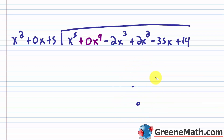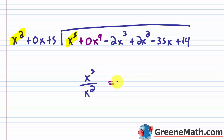So the first step is division — with polynomial division it's leading term into leading term. So what is x to the fifth power divided by x squared? Using rules of exponents: x stays, 5 minus 2 is 3, so this is x cubed. I'll write x cubed above the x cubed term in my dividend.